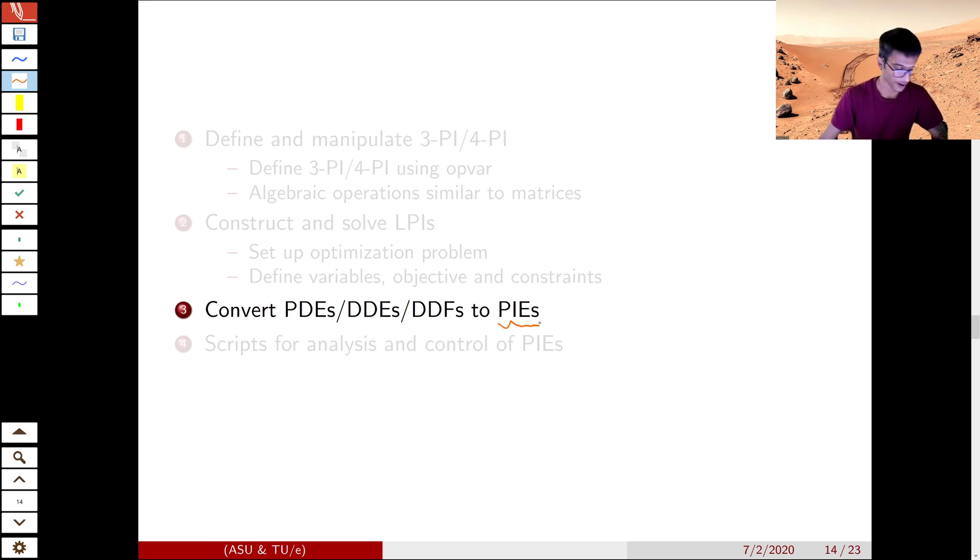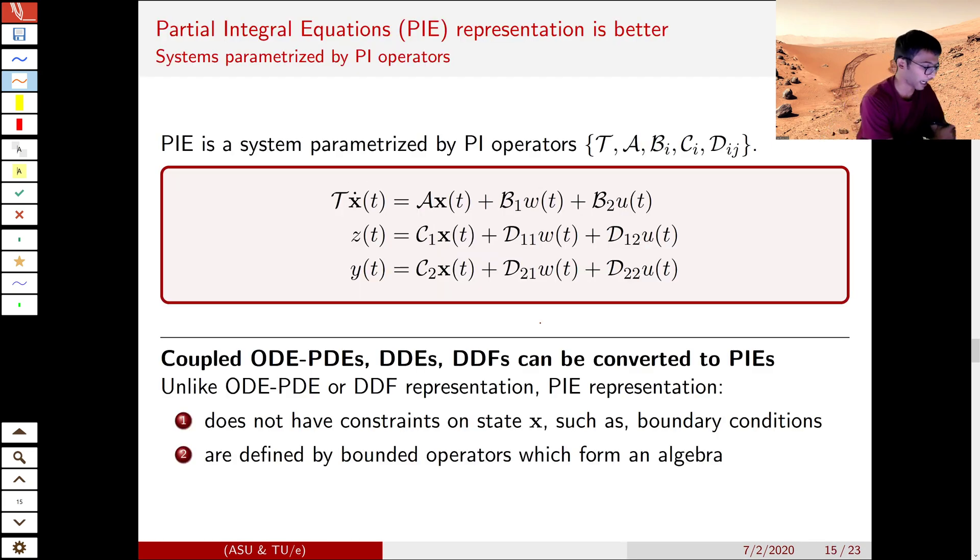So let's look at a general form of PIEs that we normally encounter. A PIE can be written in a general form that looks like this. This is very similar to nine matrix representation of ODEs. The only difference is they have PI operators instead of matrices. However, that's where the difference ends. They are still bounded operators. They also form an algebra, just like matrices do.